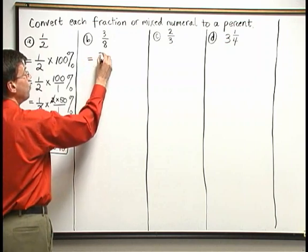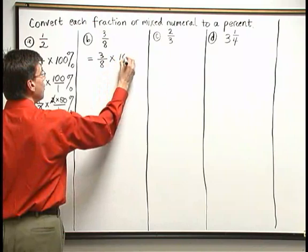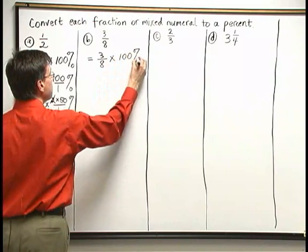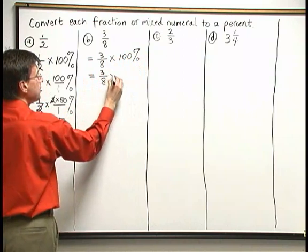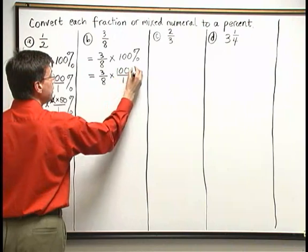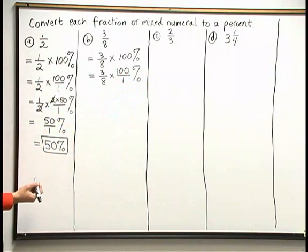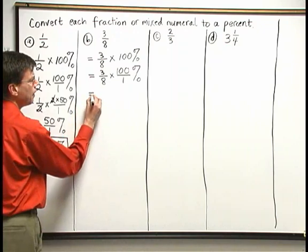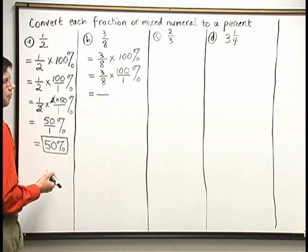To convert to percent form, we take 3 eighths times 100 percent. That's the same as 3 eighths times 100 over 1 percent. Again, I'd like to do some canceling before I multiply. And in order to cancel here, I'm going to go ahead and break down some of these numbers above and below.